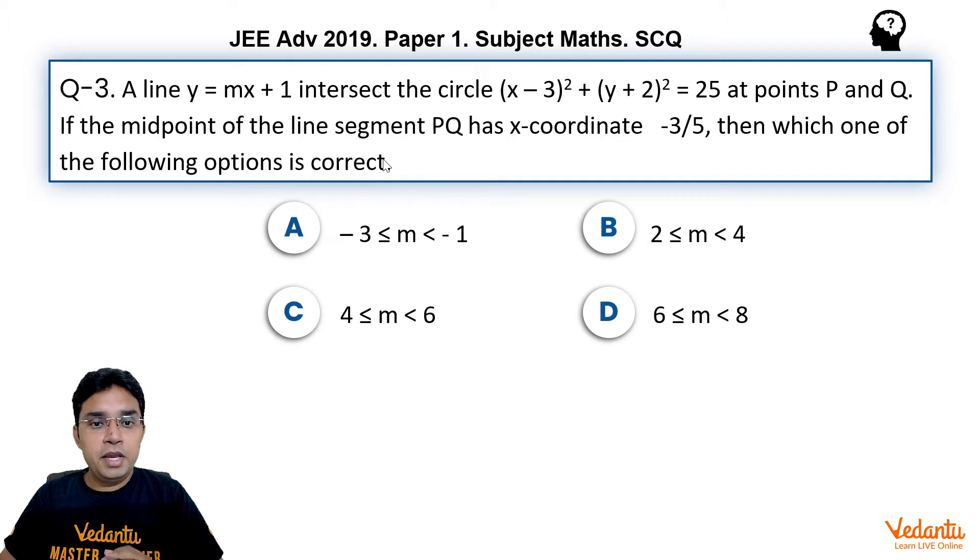A line y equals mx plus 1 intersects the circle (x minus 3) whole square plus (y plus 2) whole square equals 25 at points P and Q. If the midpoint of the line segment PQ has x-coordinate minus 3 upon 5, then which one of the following options is correct.